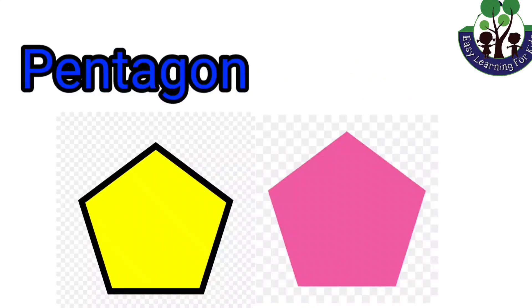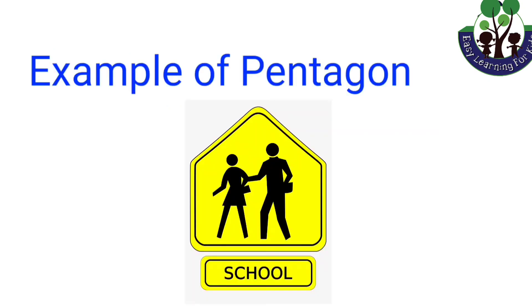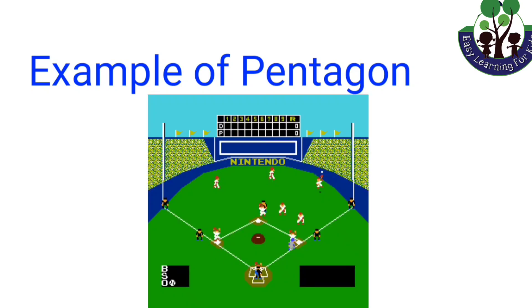Pentagon. A pentagon is a polygon with five sides and five angles. All the sides of a pentagon meet with each other end to end to form a shape. For example, school crossing sign and a home plate on a baseball field.